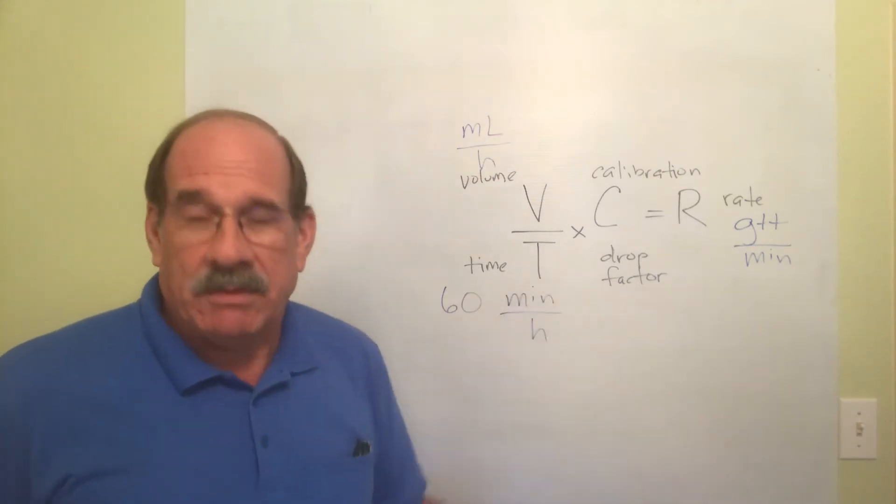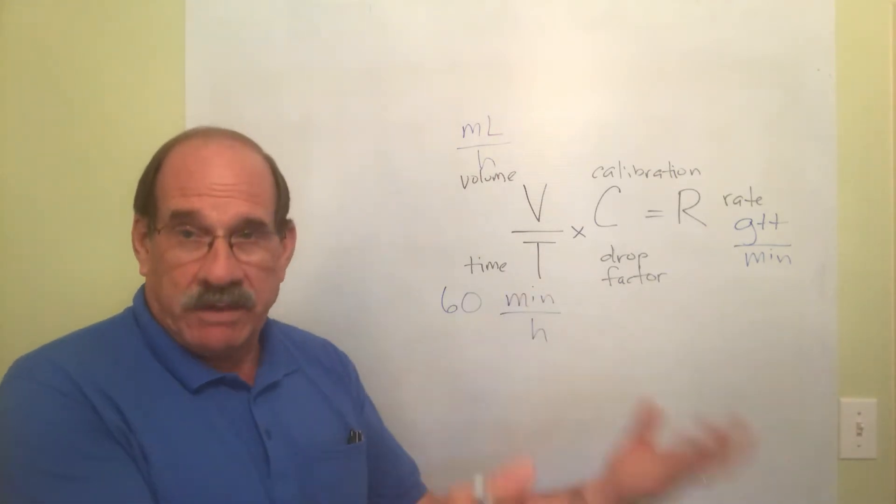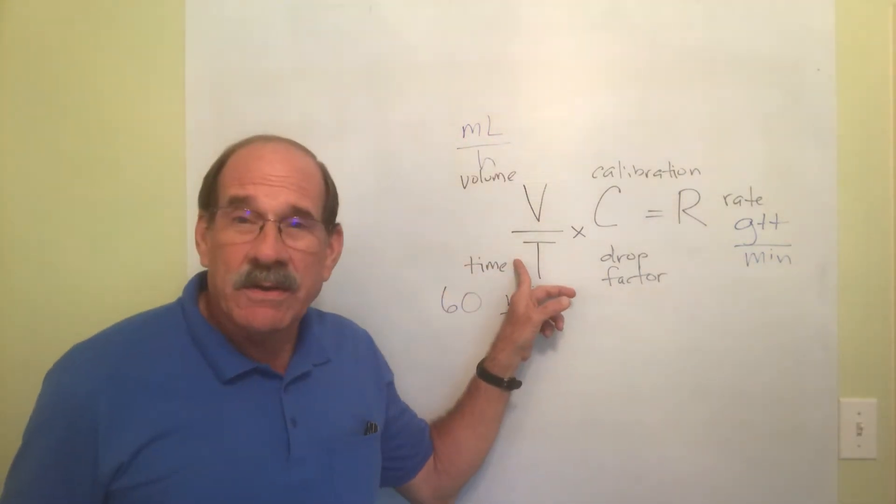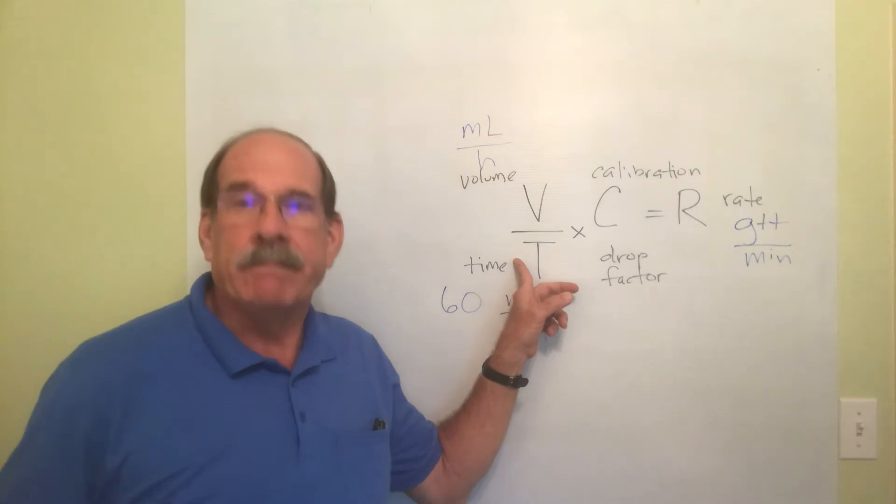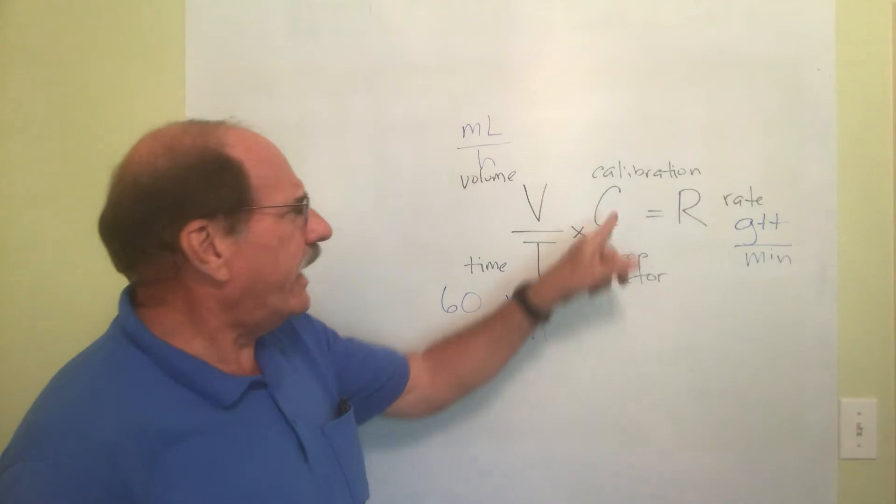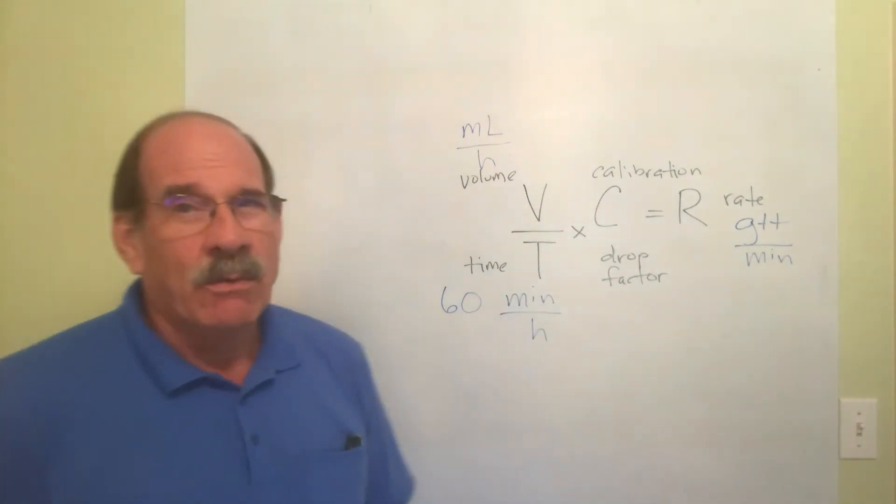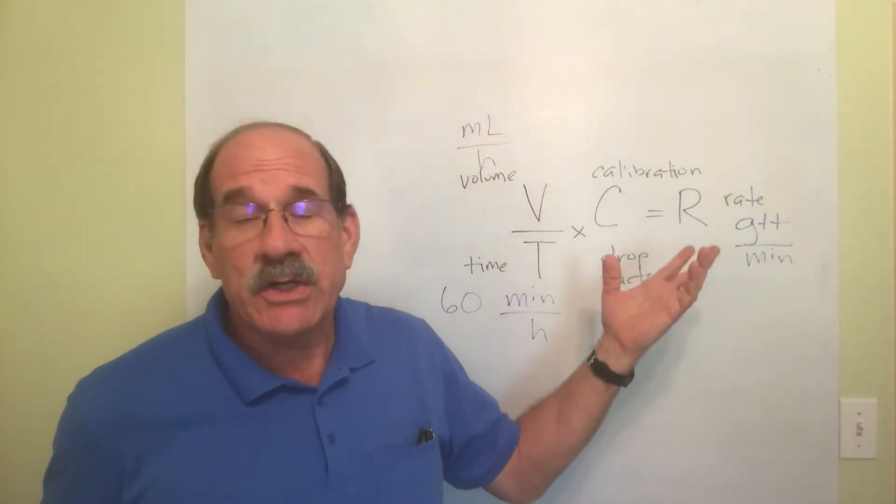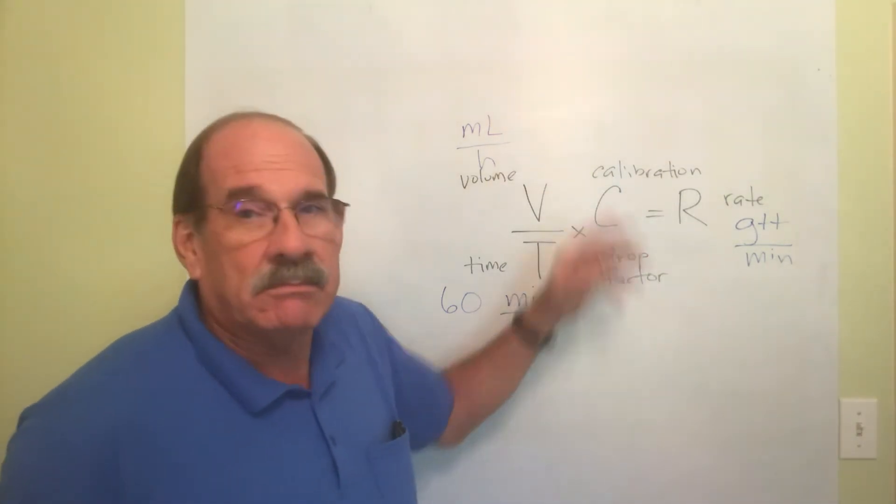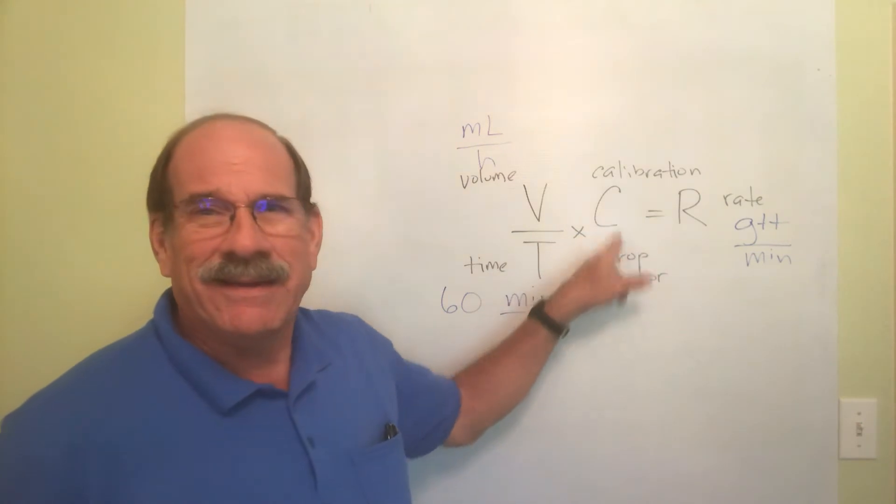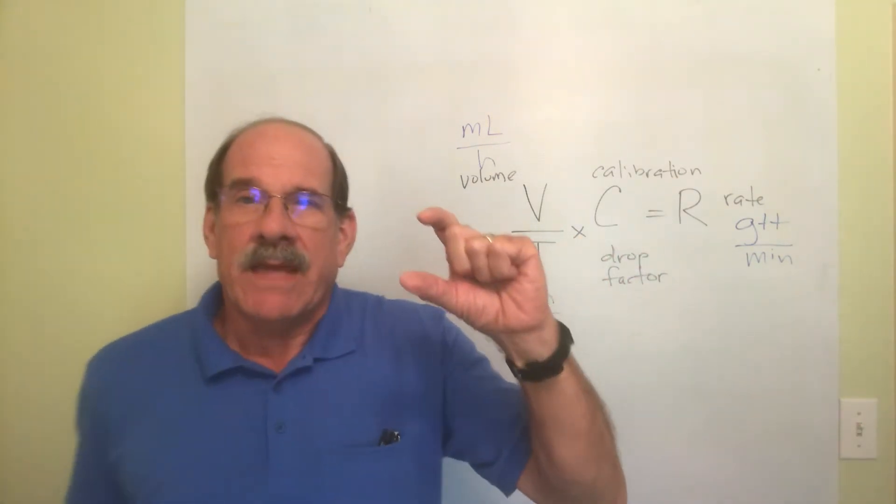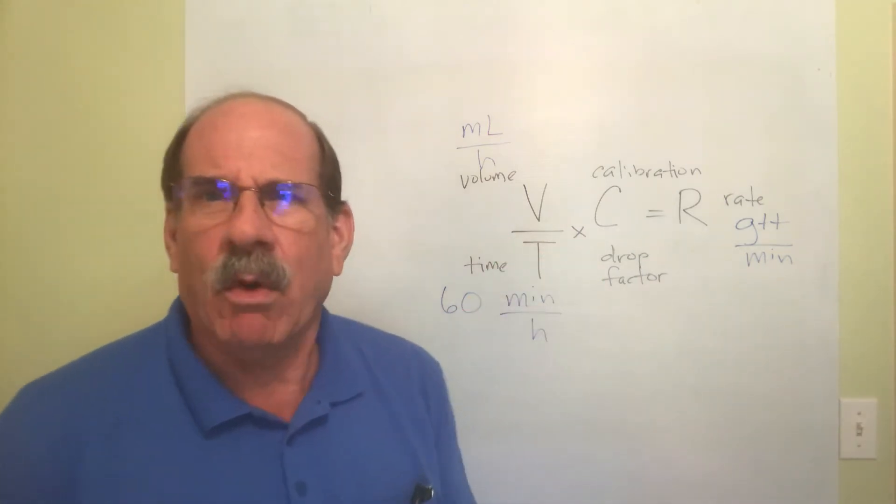As I do these problems and show you on the next few videos, we'll put milliliters per hour here, put what number is going to go here without even thinking about it - 60. Pretty simple. Now this thing, calibration. A lot of books call it the drop factor, same thing.